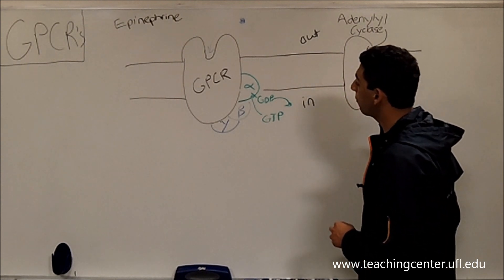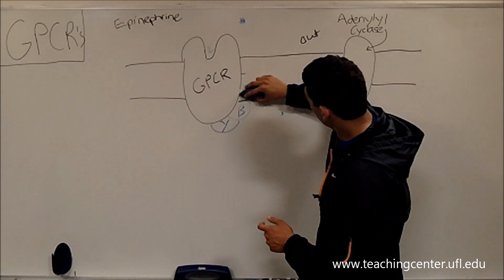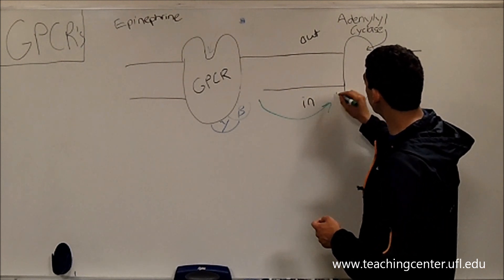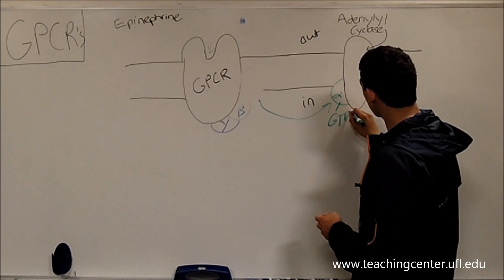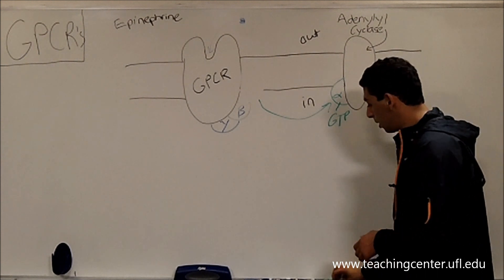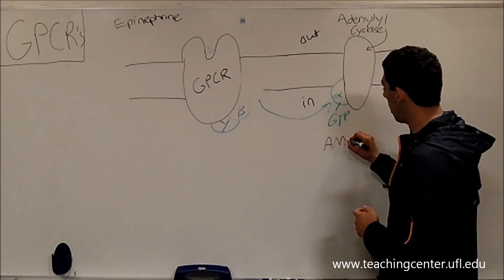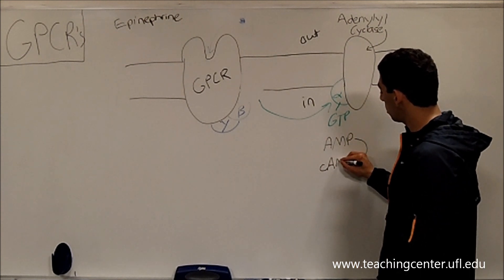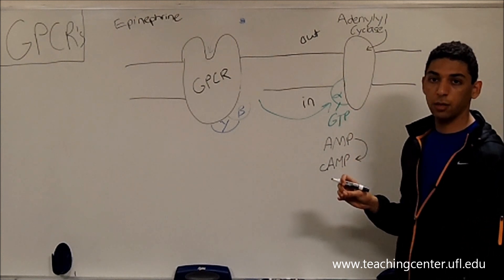Once the alpha subunit has its GTP bound to it, it leaves — it dissociates from the G-protein-coupled receptor and moves to attach itself to adenylyl cyclase. Adenylyl cyclase is another membrane-bound protein. As the name implies, it takes AMP and cyclicizes it to make cyclic AMP, as long as the alpha subunit is attached to it.